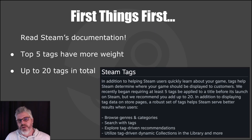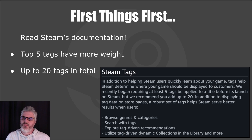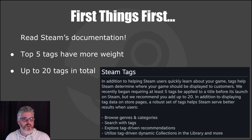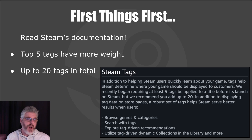First things first, when dealing with everything Steam, you should go to the Steam documentation first and just read all about it. Steam is pretty transparent — not necessarily about what their algorithm is doing, but they're very transparent about what you should be doing marketing-wise, tagging-wise, etc. They say right at the top of the Steam tag page that your first five tags are the most important. You can tag up to 20, but the top five have way more weight than the bottom 15.